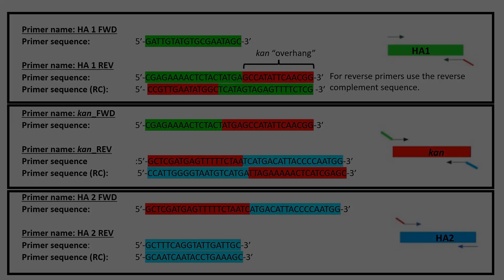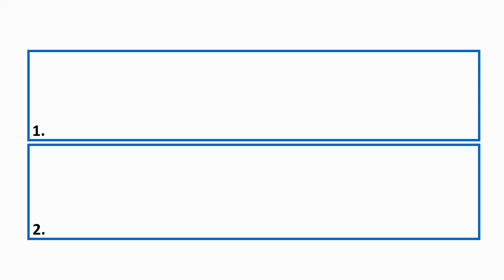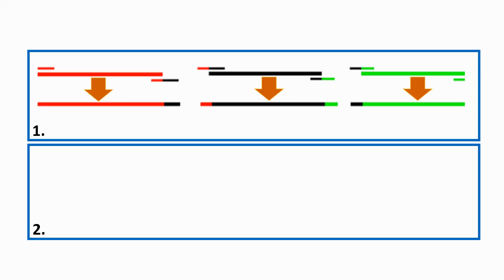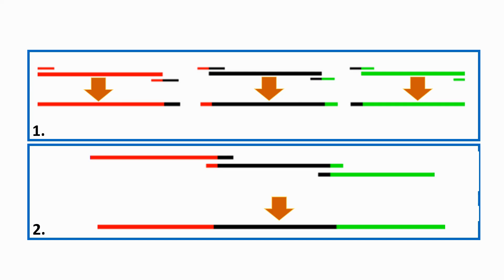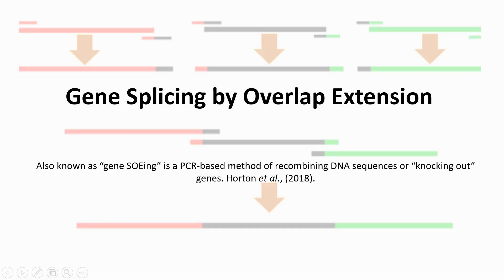With luck, these three primer pairs will first yield three PCR products, which will be subject to further rounds of PCR to give a final single sequence which can be integrated back into our genome under investigation. I hope this short video on primer design for gene splicing by overlap extension has helped. Good luck designing your own primers.